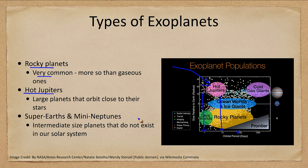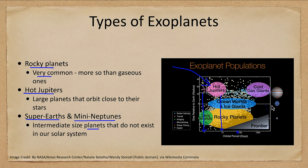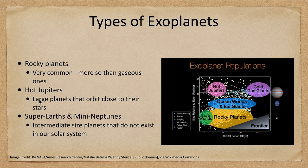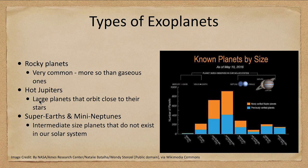Hot Jupiters are really massive planets really close to their stars, which gives us something important to think about when looking at how planetary systems form. We also look at the super-Earths and mini-Neptunes — intermediate-sized planets that do not exist in our solar system. In our solar system there is a gap: no planets larger than Earth and smaller than Neptune. But look at all the planets that exist in that range elsewhere. Why don't we have any of those types?